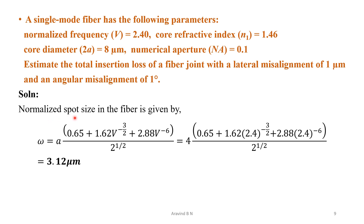First, we need to calculate the normalized spot size: ω = a × [0.65 + 1.62V^(−3/2) + 2.88V^(−6)]^(1/2). Here, a = 4 micrometers (radius from the given diameter of 8 μm) and V = 2.40. Substituting these values, we obtain ω = 3.12 micrometers.